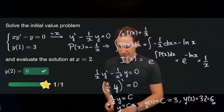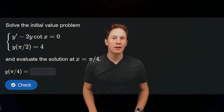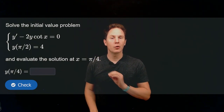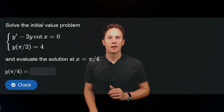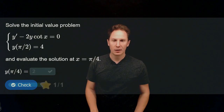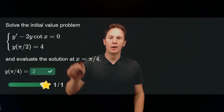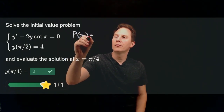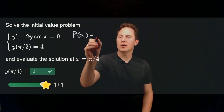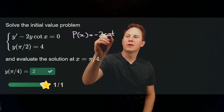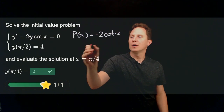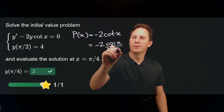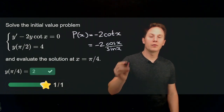Let's look at the next question: solve the initial value problem and evaluate the solution at x equals 5π/4. Again this is a separable ODE, but try solving it using the integrating factor instead. The value is 2. Using the integrating factor method, we first need to identify the function multiplying y in the equation, which is negative 2 times the cotangent of x, or equivalently minus 2 times cosine of x over sine of x.